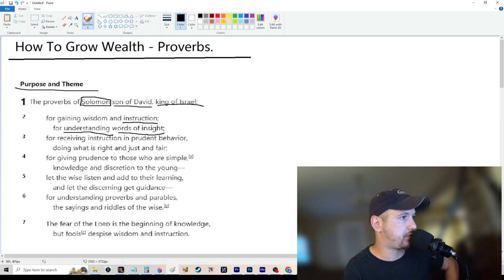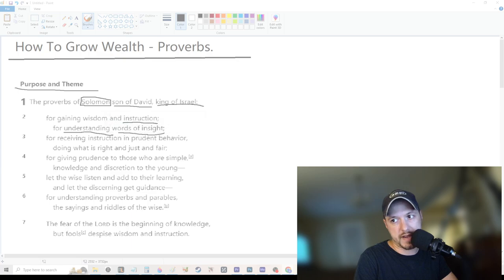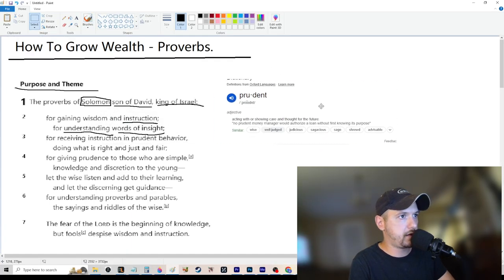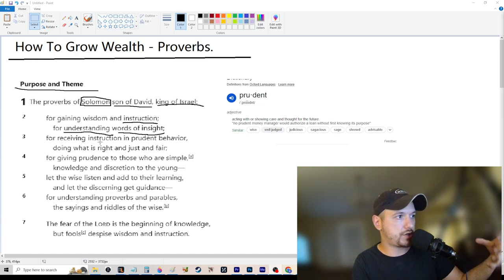For receiving instruction and prudent behavior. Let's look up the word prudent. One of those words we should look up. Prudent is acting with or showing care and thought for the future. So like they talk about like smart people think about long-term. So then again, receiving instruction in long-term success behavior. Easy peasy. All right. We're moving along.